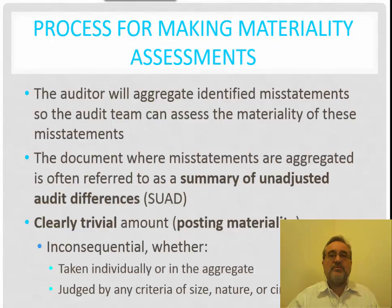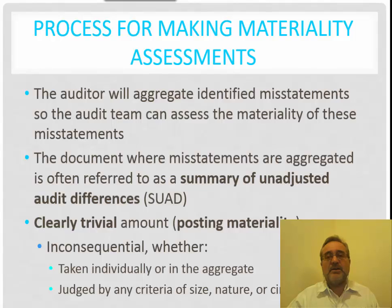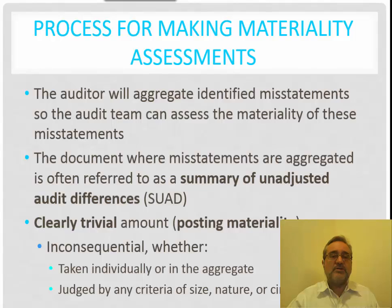The process for making materiality assessments: the auditor will aggregate identified misstatements so the audit team can assess the materiality of these statements. We're looking at account balances, classes of transactions, and based upon our audit testing, we're identifying specific misstatements in each of these items. In our substantive testing, we are measuring monetary misstatements. The document where misstatements are aggregated is often referred to as the Summary of Unadjusted Audit Differences, or SUAD.